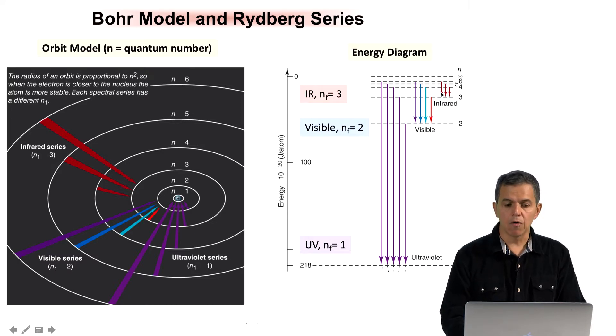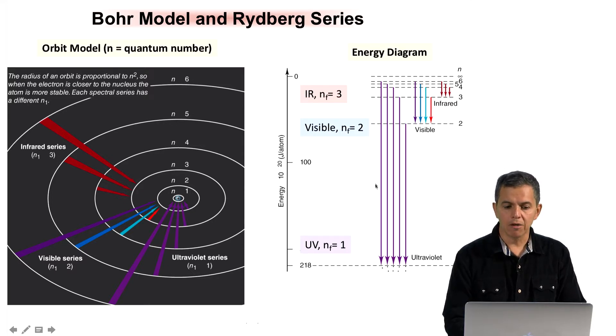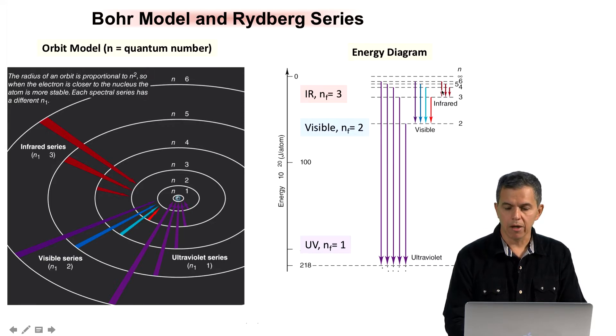Respectively, the photons of these different transitions will be higher in energy for the ultraviolet, middle energy for the visible, and lower energy for the infrared.